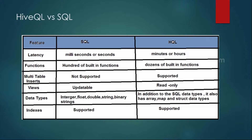In terms of data types, SQL supports int, float, double, strings, blobs, and binary objects. HQL supports all of those and additionally has array, map, and struct data types. We will see when and how to use these new data types in further modules. For indexes, both SQL and HQL support them to ensure performance.